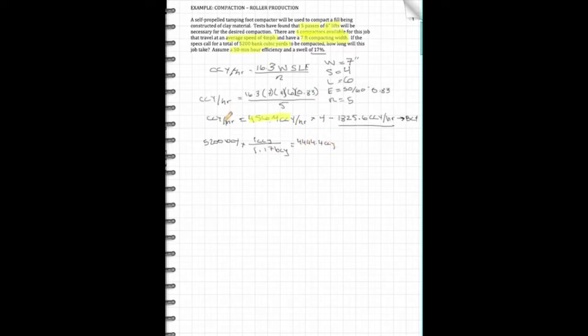Okay, so just the final step here, if we want to find the time, that's going to equal the volume that we need to handle divided by the production. So that's going to equal this 4444.4 compacted cubic yards, and we're going to divide it by the production, which is 1825.6 compacted cubic yards per hour. So looking at the units, these guys cancel, this guy moves up, we get the answer, which I'll put down here, is 2.43, and the answer is in hours.